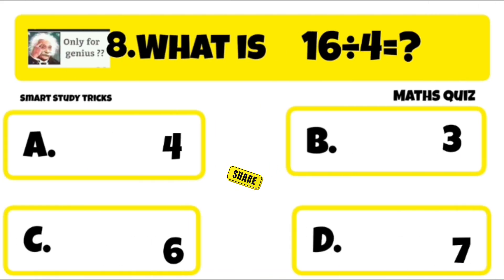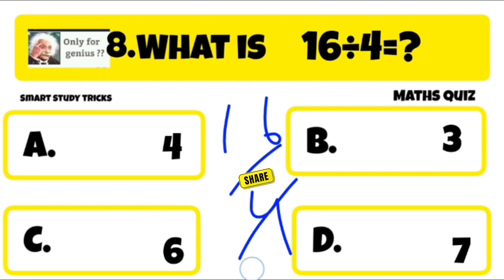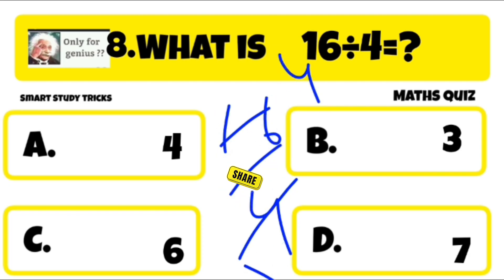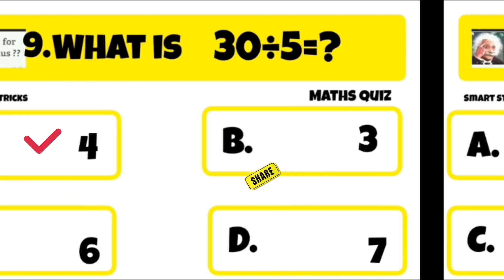Quiz number 8 is: what is 16 divided by 4? 16 divided by 4 is equal to 4. Right answer is A: 4.